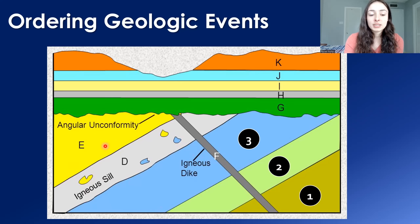Next is whether the igneous dike or the igneous sill came first. The igneous dike cross-cuts all layers including the sill, meaning the dike is younger than the sill. So the sill is event five. The dike, layer F, is event six because it cuts across all older layers including F. Then G, H, I, J, and K follow in order by superposition. Remember we're ordering geologic events, not just rock layers — so include erosion, which here is event twelve, the last geologic event shown in this picture.